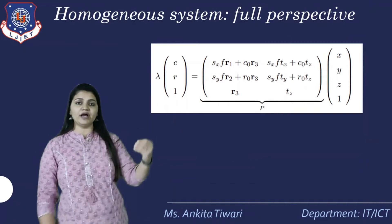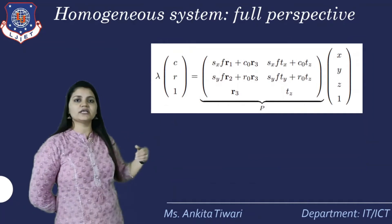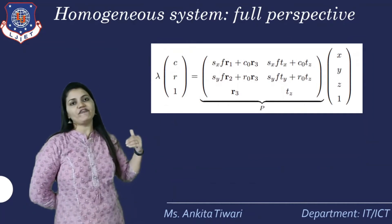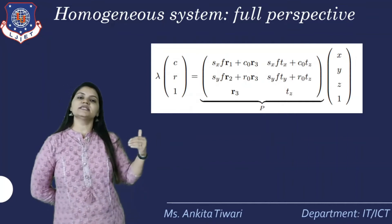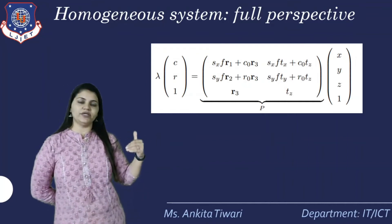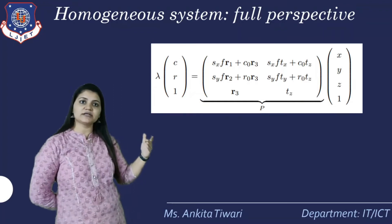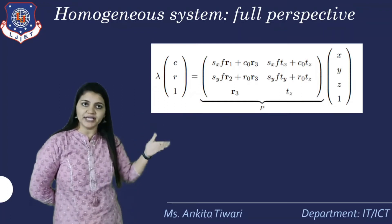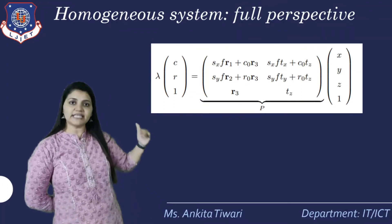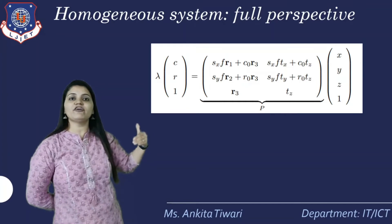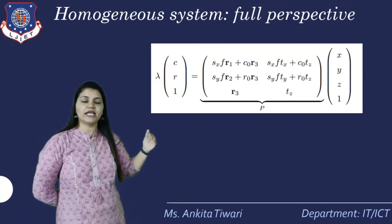Lambda multiplied by CR gives: Sx·F·R1 + C0·Tz for the first row, and Sy·F·R2 + R0·Tz for the second row. The scaling factor is defined only for the two points X and Y; the third point is the homogeneous coordinate, which is 1. So for that particular homogeneous row, only R3 and Tz are defined, corresponding to the perspective projection matrix multiplied with the scaling vector.